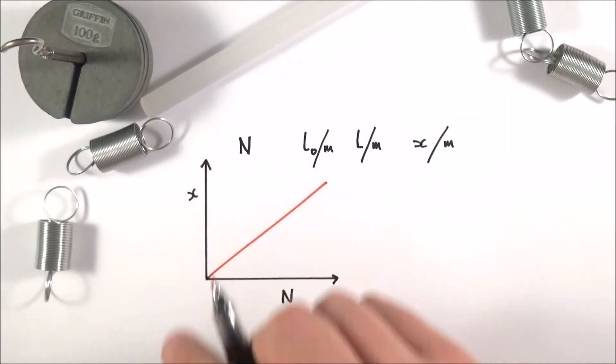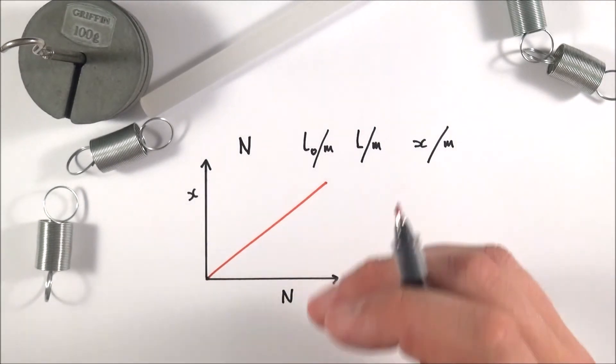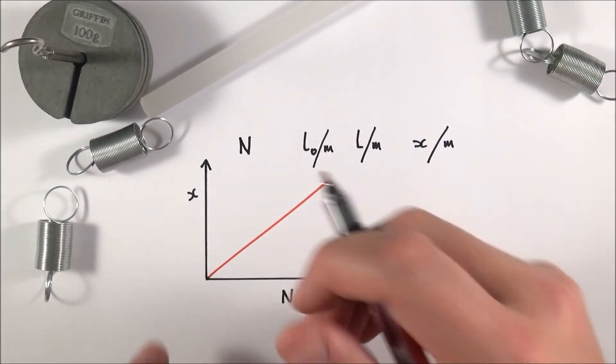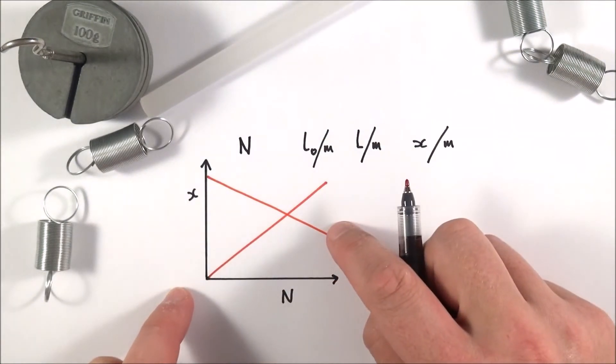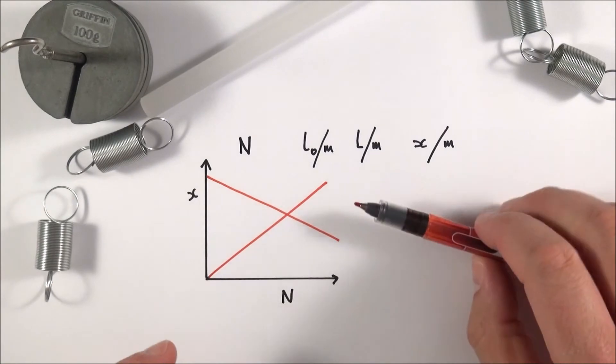Also it's maybe a bit opposite when you've got springs which are in parallel: the more springs you have in parallel, the less the extension. So hopefully that makes sense.